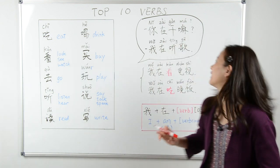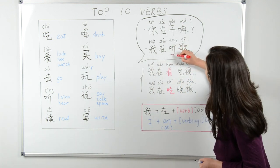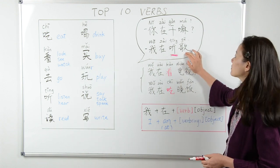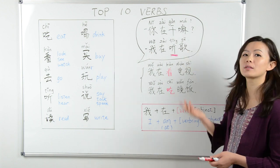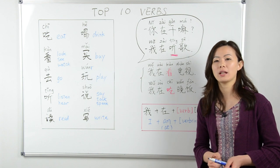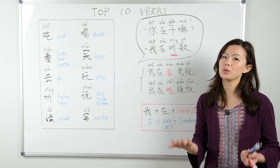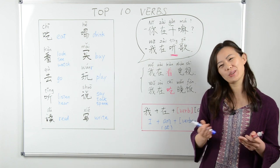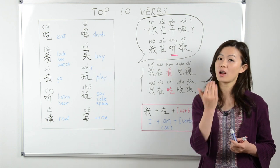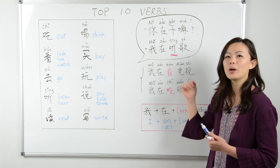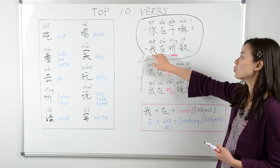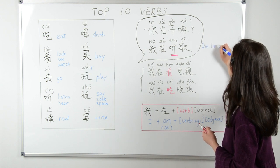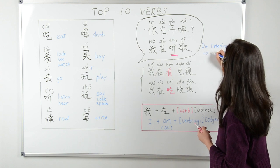The verb is 听, which means listen. And what comes after 听? 歌. 歌 means song. So 听歌 together is a verb phrase meaning to listen to songs or listen to music. 听歌 is a very native way to say 'listen to music' because most of the time when we listen to music, we listen to songs with lyrics. So 我在听歌 means I'm listening to music.